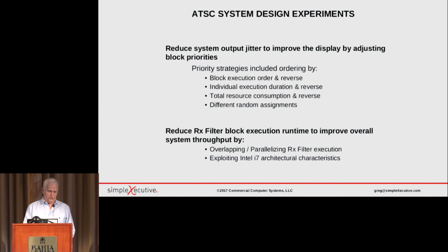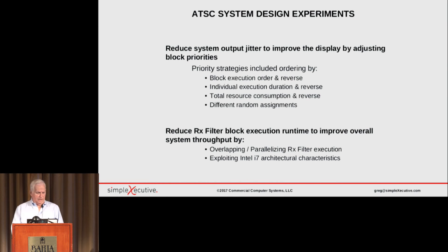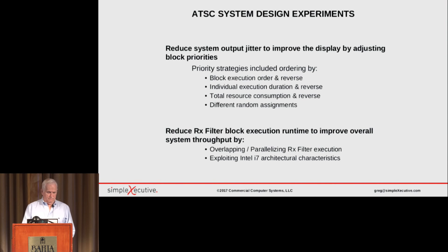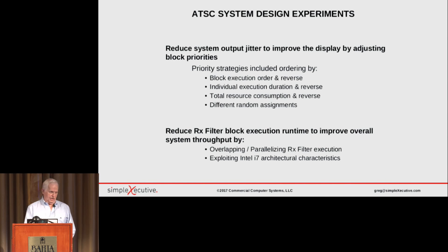In order to make this system more effective, you want to reduce how long it takes the RX filter block to run. We tried overlapping and parallelizing the filters — having two streams, one for even samples and one for odd samples, so you could overlap them and cut the load in half. That would require significant code changes we weren't prepared to make. We also looked at overlapping with staggered starts, but that raised reentrancy concerns, so that was out too.